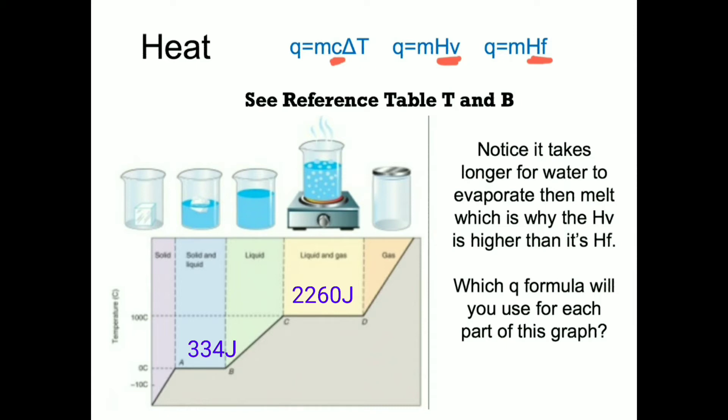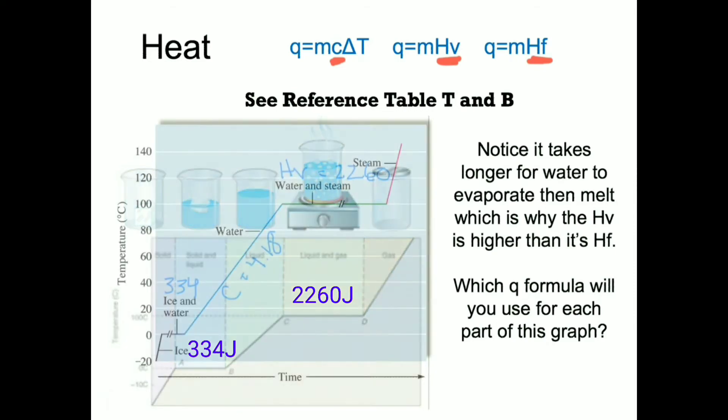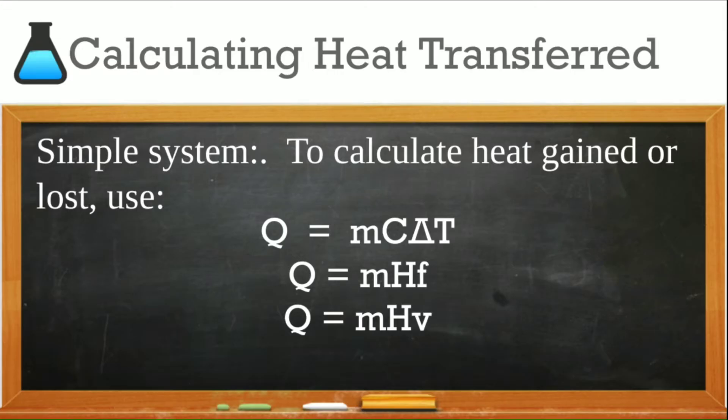Notice, the heat of vaporization is much larger than the heat of fusion. Therefore, it requires much more energy to break all intermolecular forces that hold a liquid together than it is to loosen the intermolecular forces between a solid and a liquid. These three equations are found on the very back of your Regents Chemistry Reference Table, table T. So now you have to make sure you have out your Regents Chemistry Reference Table and your calculator.